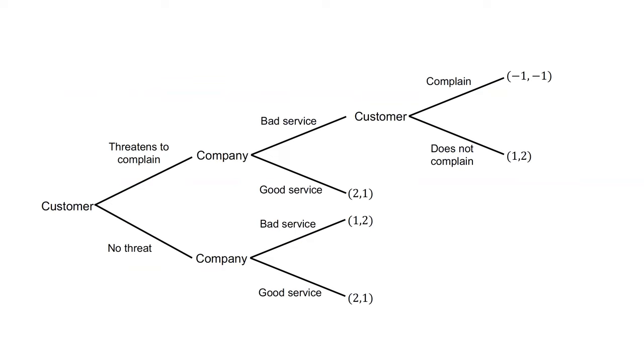Recall an example from an earlier video on sequential games and commitment, regarding a customer threatening to complain if they receive bad service. Complaining is costly. We work through this problem by backward induction. At the final node for the customer, they can complain for a payoff of minus one or not complain for a payoff of one.